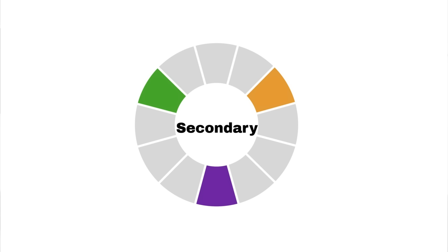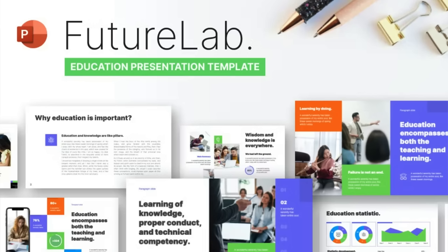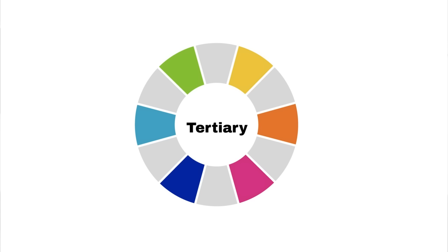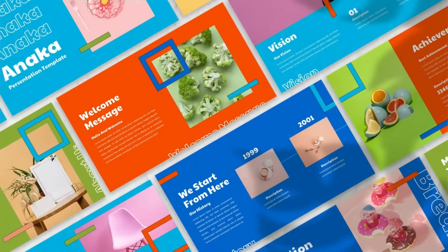If we mix these three primary colors, we will get three secondary colors — green, purple, and orange. This is also another contrasting color palette of only three colors. And by mixing primary and secondary colors, we can get tertiary colors — something in between, like an orange-yellow or a red that is a little bit more orange.